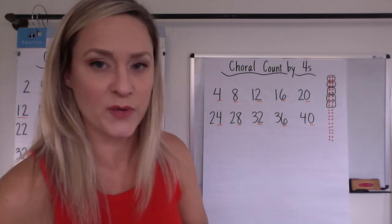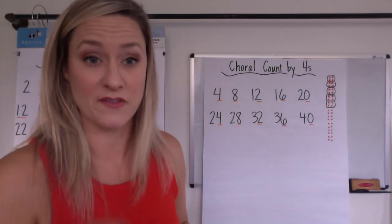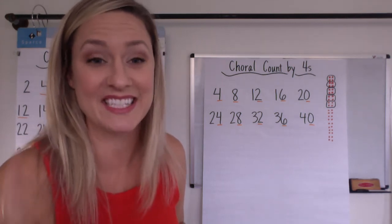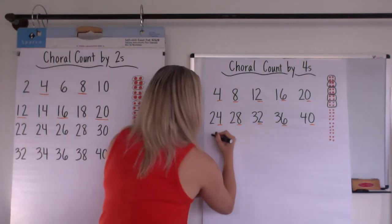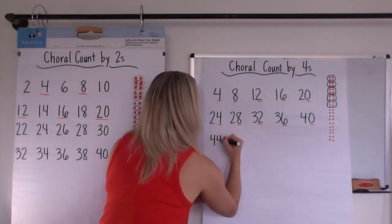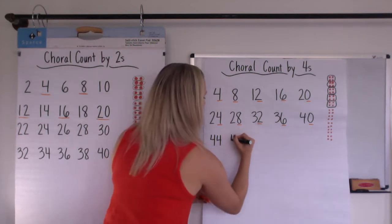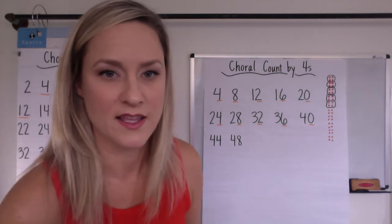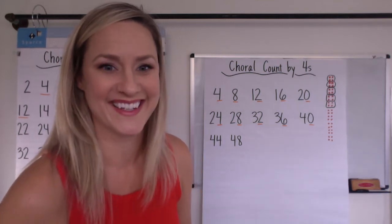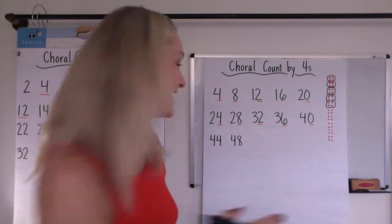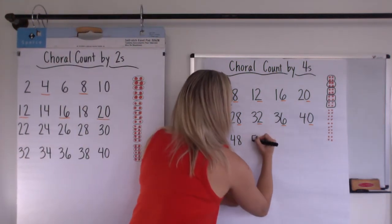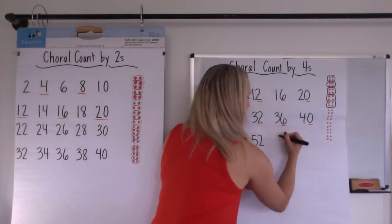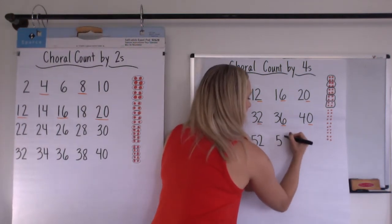All right. So 4, 8, 12, 16, 20, 24, 28, 32, 36, 40. Here we go: 40, 44, 48. What comes next? This is always the tricky one — kids always get stumped on this one. Did you get stumped? It is 52 and then 56.